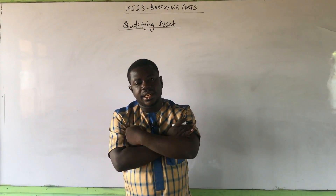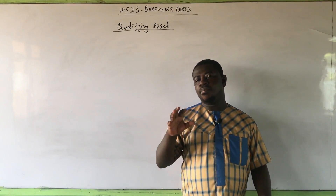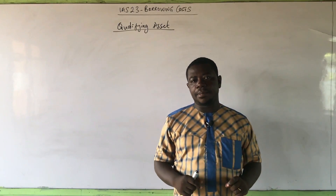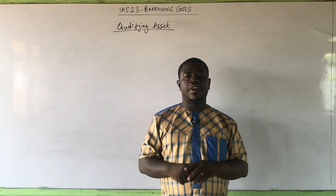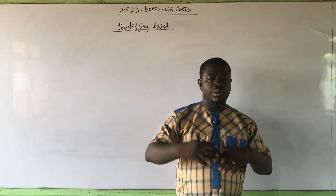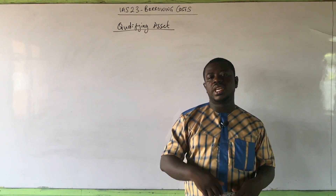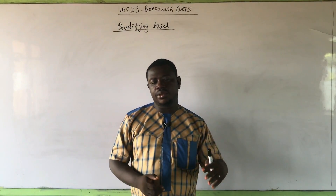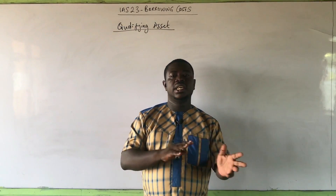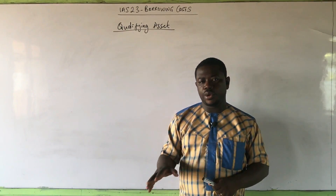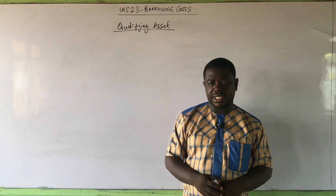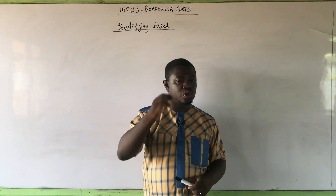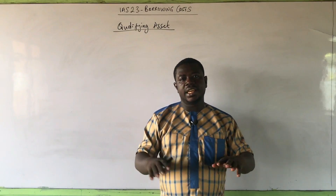We are done with the understanding of qualifying assets. We are left with one more important area: specific funds and general borrowings — how to treat them, how to calculate borrowing costs when the funds are specifically for the project, and how to calculate borrowing costs for a general pool of funds. In either case, we will solve two questions, one for each scenario. We will also talk about the commencement and cessation provisions, and then we'll be done with borrowing costs. That will be in the next video.